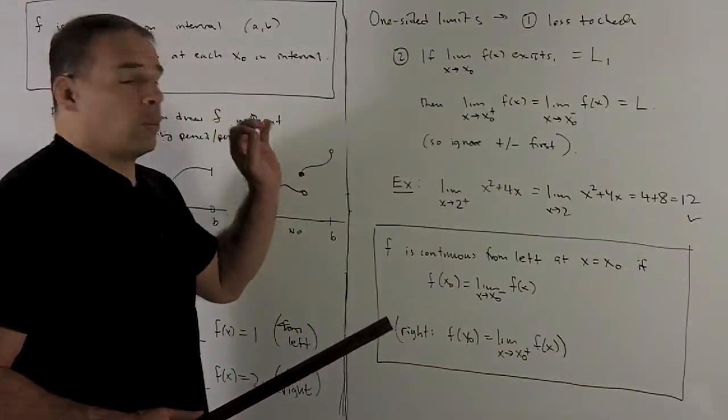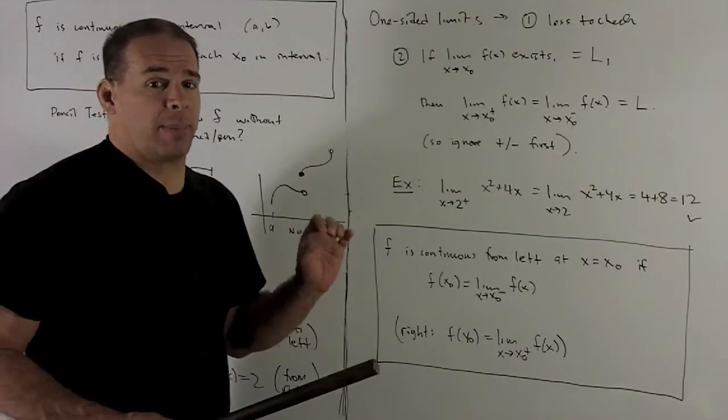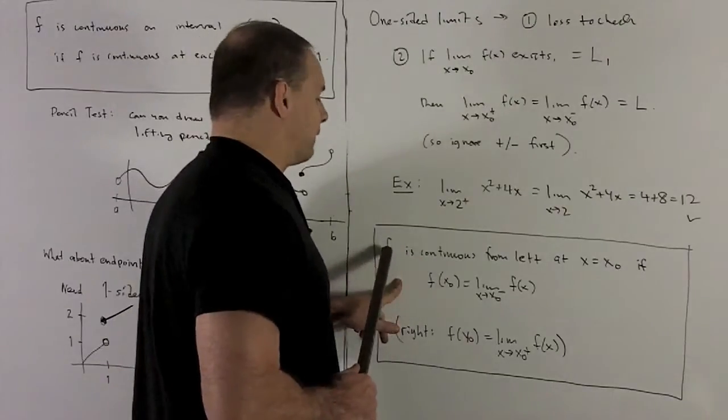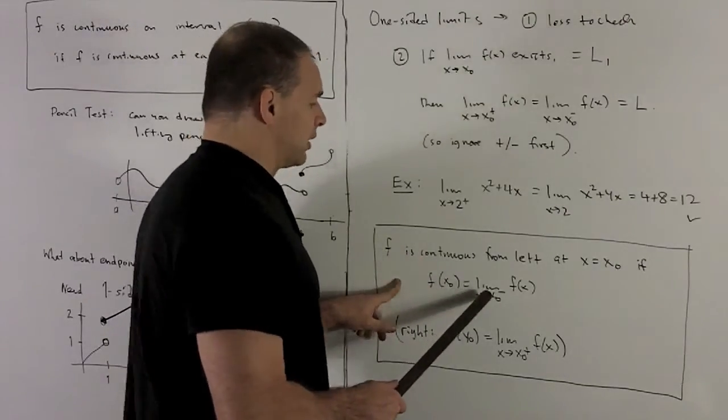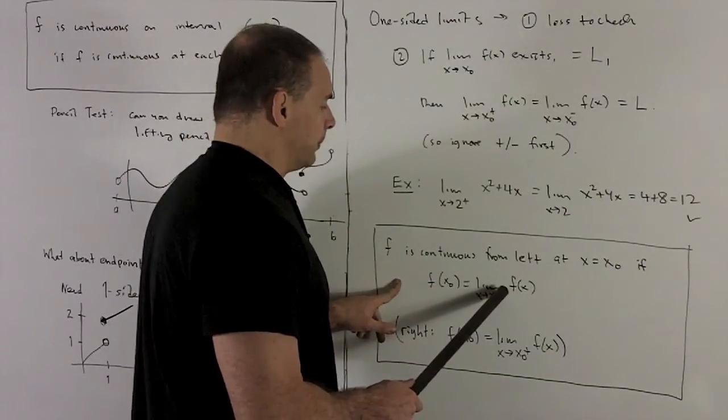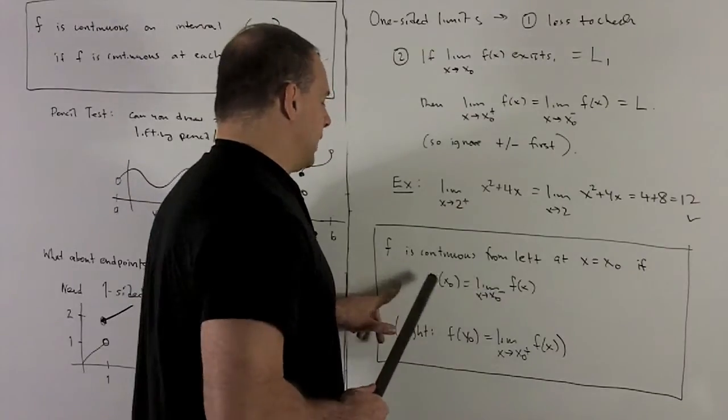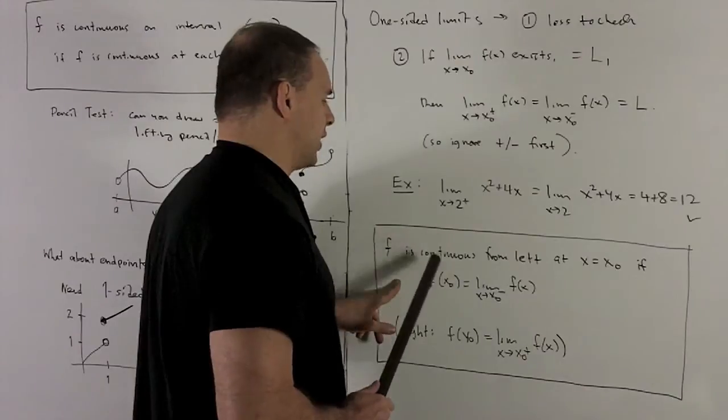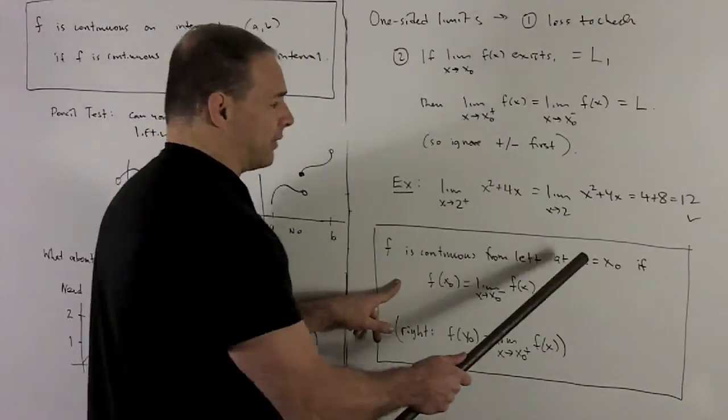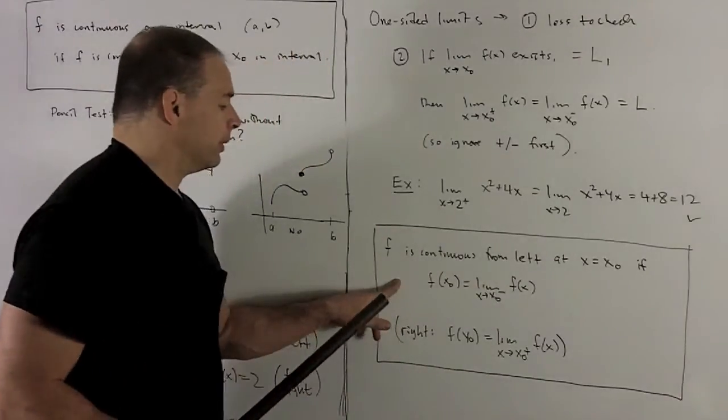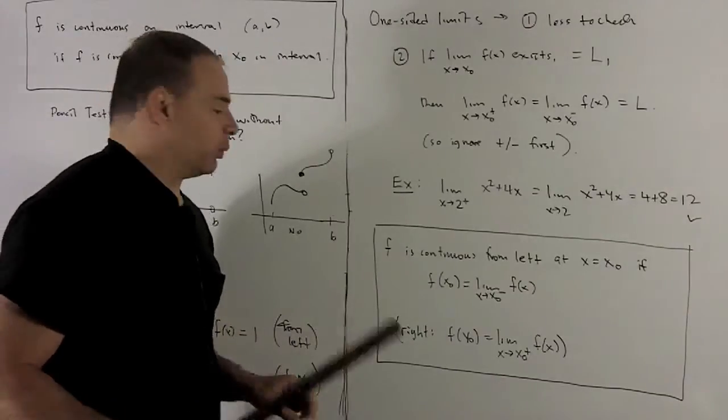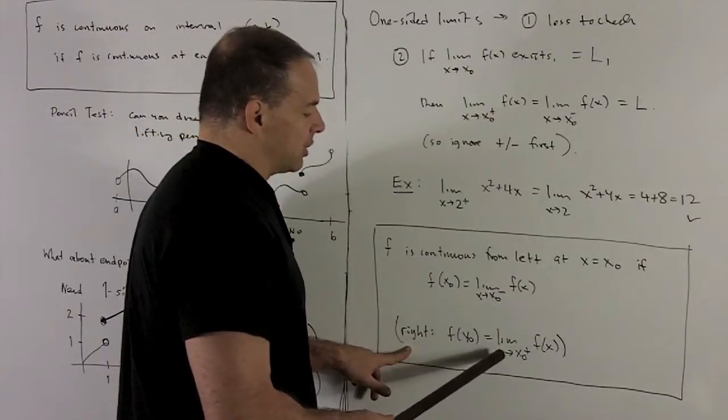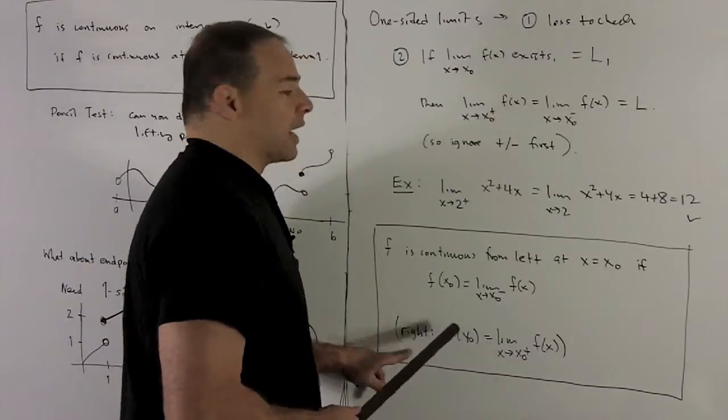Now with one-sided limits in place, we could talk about continuous from the left or right of a function. That's just going to be, you take your function f, you take the limit, say, as we go from the left. Is that going to be equal to the actual value of the function? If it is, we call that continuous from the left at the point x equal to x0. We have a similar definition if you want to go from the right. In this case, you're just asking, does the limit as we come in from the right equal the actual value?